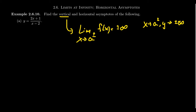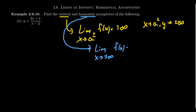On the other hand, a horizontal asymptote goes in the other direction. If we have the limit as x approaches plus or minus infinity of f of x, and we end up with some finite number a, that is going to be a horizontal asymptote. So as x approaches plus or minus infinity, y will be approaching a finite number, either from above or below.